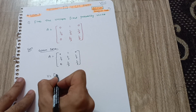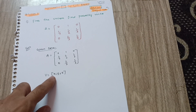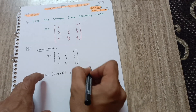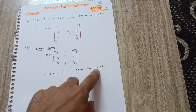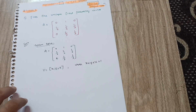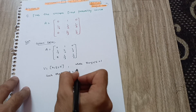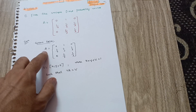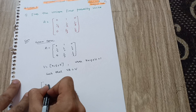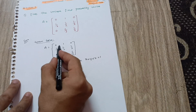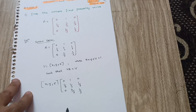The unique fixed probability vector is given by v = (x, y, z). You have to calculate the x, y, z values where x plus y plus z should be equal to 1. The given condition to follow is vA = v, meaning this unique fixed probability vector multiplied by matrix A equals v. So I write: (x, y, z) into [0, 1, 0; 1/6, 1/2, 1/3; 0, 2/3, 1/3] equals (x, y, z).